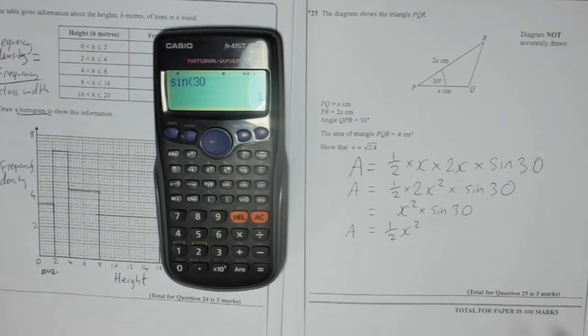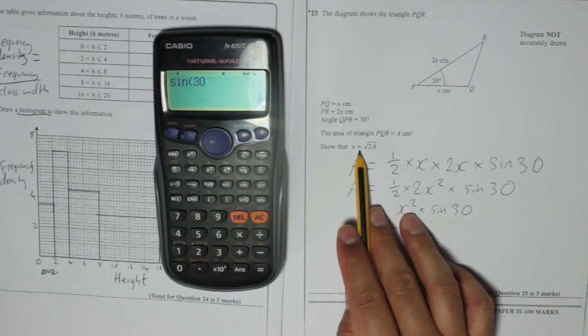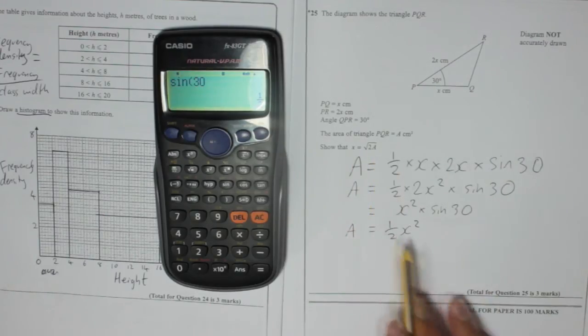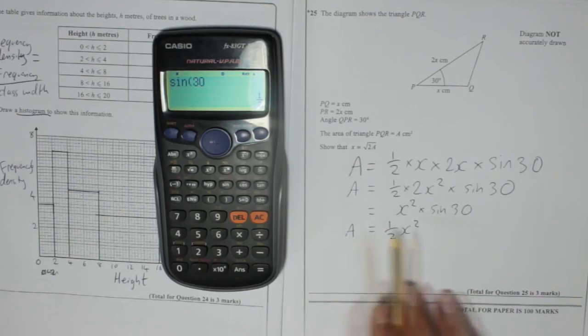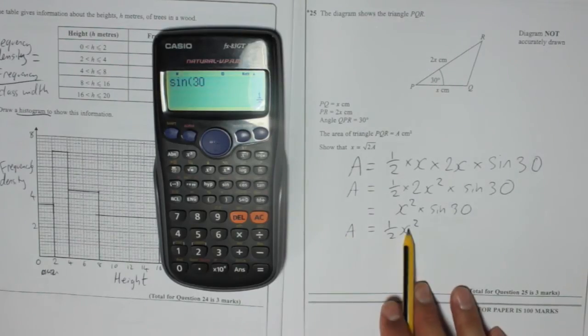Now, the question says, show that x is equal to the square root of 2a, so how can we show that x is the square root of 2a? What we need to do is rearrange it, don't we, get x on its own.